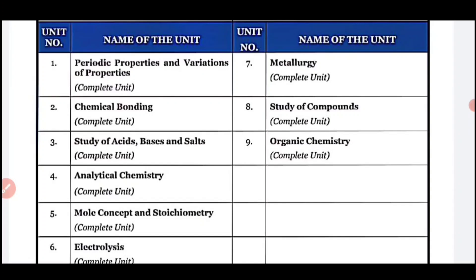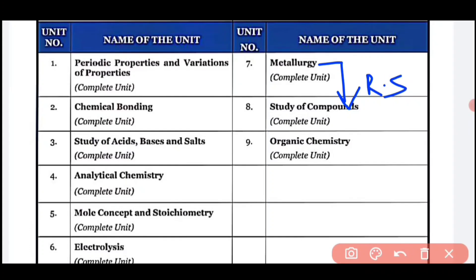All topics are important, but you must complete the topics with the most chance of appearing in Semester 2. For the metallurgy chapter, you have to prepare the complete unit. The reactivity series is important, plus all important terms and definitions. The chemical names of ores — like bauxite, hematite, and magnetite — are really important. The specimen paper also has a question regarding this topic, so go through the chemical names.